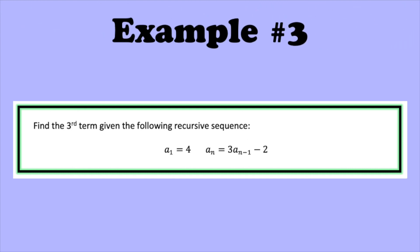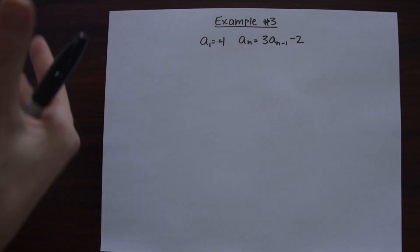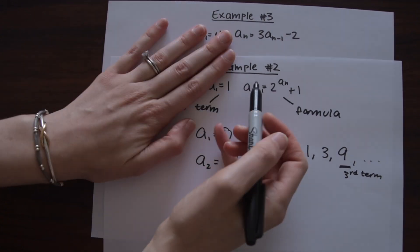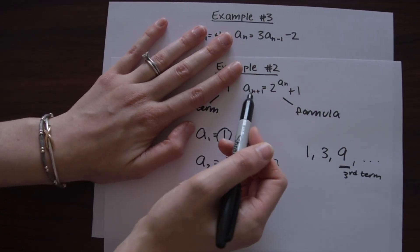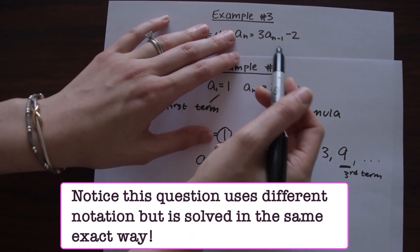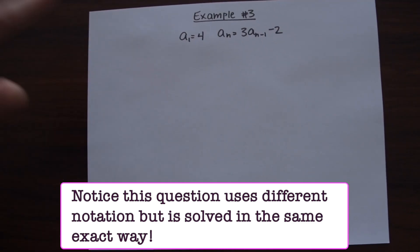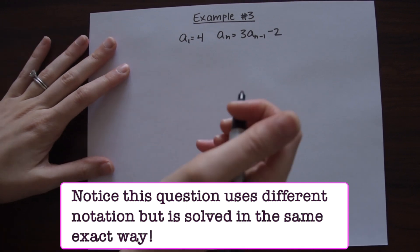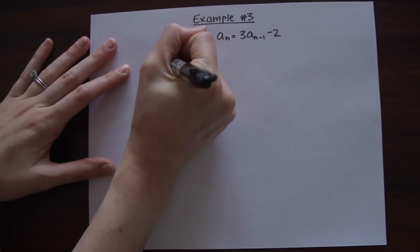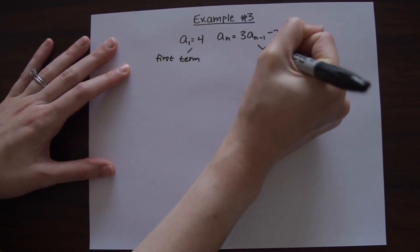For example three we need to find the third term again, but this time the notation looks a little different. We have a sub one equals four, and the formula is a sub n equals three times a sub n minus one, minus two. Compared to the previous example, the formula uses a sub n minus one rather than a sub n plus one, but even though the notation is different, it's still a recursive formula solved the same way — don't let the different notation confuse you.